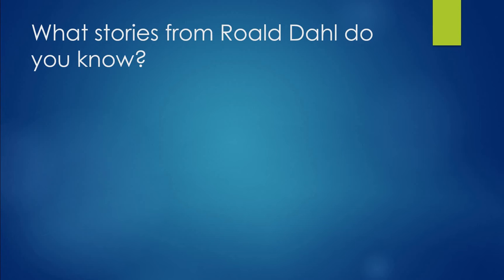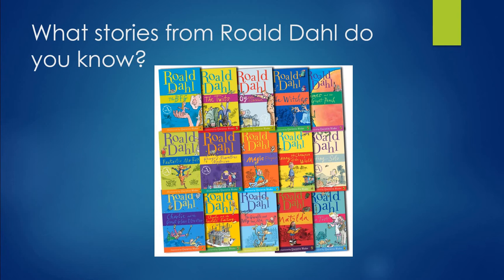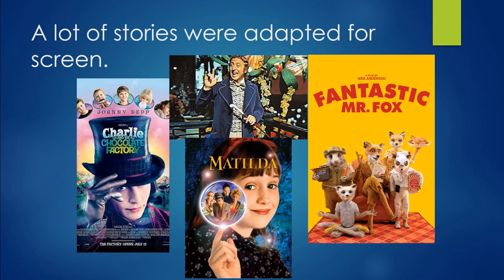Roald Dahl was quite famous and he wrote quite a lot of children's stories. He is famous for writing The Big Friendly Giant — the BFG, or as we in Dutch call it the GVR, the Grote Vriendelijke Reus. He has written many other stories as well: The Witches is also quite famous, perhaps even the most famous story is Charlie and the Chocolate Factory. Matilda, The Fantastic Mr. Fox, Danny the World Champion — all quite famous stories, and a lot of them have been adapted for the screen, turned into movies.